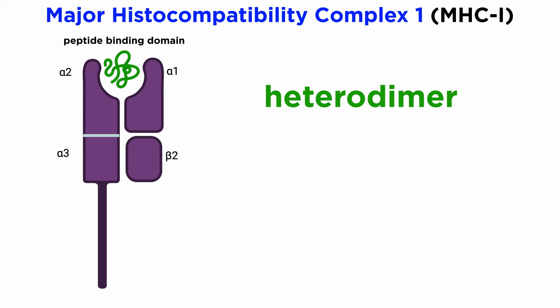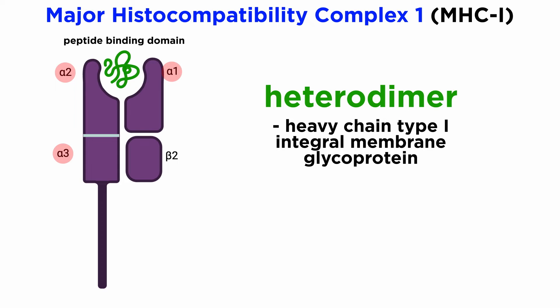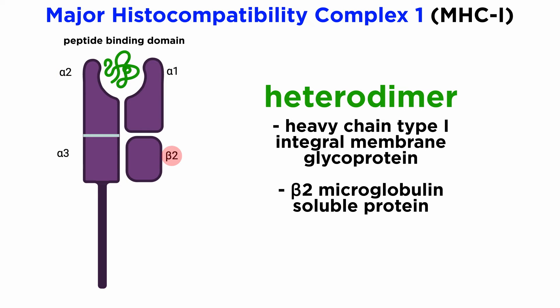MHC class I molecules are heterodimers of a heavy chain type I integral membrane glycoprotein and beta-2-microglobulin, or beta-2m, a soluble protein. These heterodimers are arranged in a specific pattern. The extracellular regions of the heavy chains fold into three domains — alpha-1, alpha-2, and alpha-3 — whereas beta-2m contributes as the fourth domain. The alpha-1 and alpha-2 domains are crucial as they form the main peptide binding site. This groove is located on the upper surface of the MHC class I molecule and is essential for binding various antigenic peptides that are 8 to 10 amino acids in length.